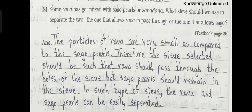Number two: Some rava has gone mixed with sabudana. What sieve should we use to separate the two — the one that allows rava to pass through or the one that allows sabudana? Answer: The particles of rava are very small as compared to the sabudana pearls. Therefore, the sieve selected should be such that rava should pass through the holes of the sieve, but sabudana pearls should remain in the sieve. In such type of sieve, the rava and sabudana pearls can be easily separated.